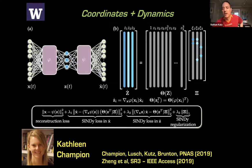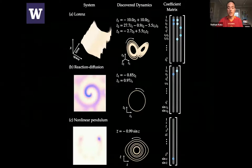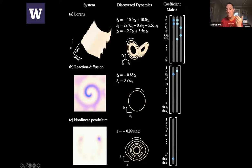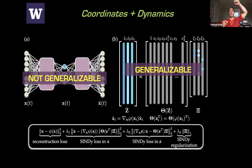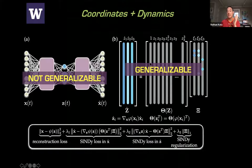Everything I've talked about so far — all the codes are on GitHub, all the data is there, so you can reproduce any of this. All students are using TensorFlow. From the Champion paper, the key example is taking pendulum pixel space data, learning a coordinate embedding, and discovering theta-double-dot equals negative sine theta. Note: the coordinate transformation is not generalizable — if you film a pendulum of twice the length, the learned coordinate system for one doesn't work for the other. However, theta-double-dot equals negative sine theta does work across different coordinate systems.